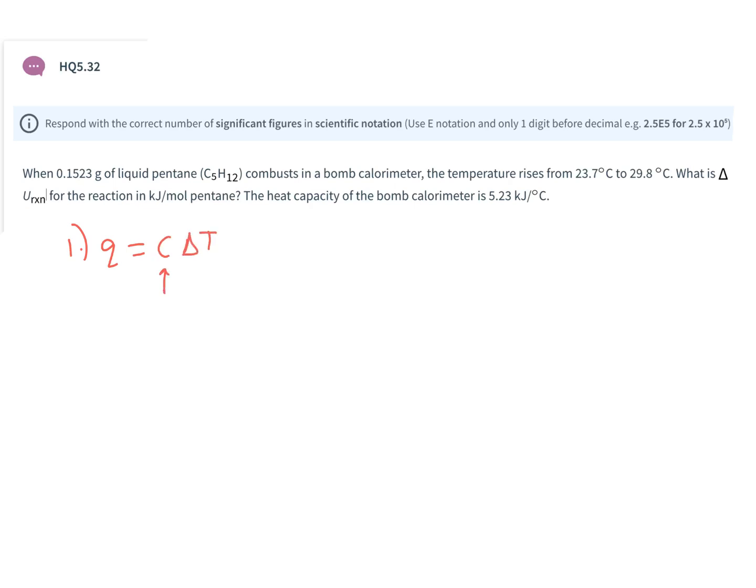where C is the heat capacity of the bomb calorimeter, T is the temperature change that the bomb calorimeter went through, and Q is what I'm looking for. That's the amount of energy transferred. So Q is my unknown.